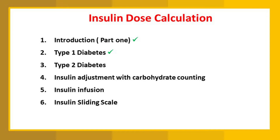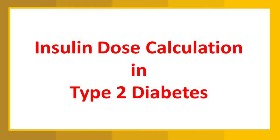In Part 1 and Part 2 we covered the introduction and how to calculate insulin dose in type 1 diabetes. This video is about how to calculate insulin dose in type 2 diabetes. In type 2 diabetes the picture is different — the pancreas produces only a small amount of insulin, so the dosing is going to be different from type 1 diabetes.